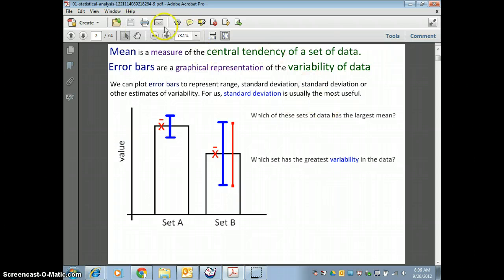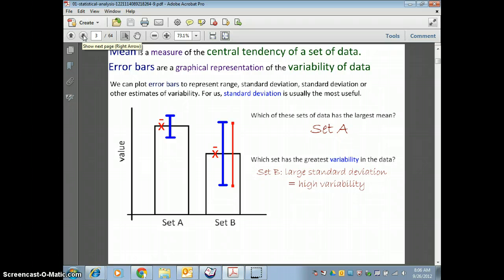When we look at this data set, we can see from this graph that A has the largest mean, B has a lower mean, and that B has a higher degree of variability because it has a larger standard deviation. So what we say when we look at data like this is that set A, because it has a lower standard deviation, we can be more confident in that data, and that data set B has more variability in the data.